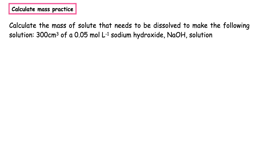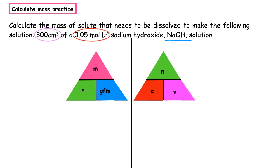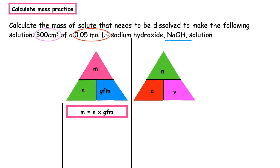The second worked example wants us to calculate the mass of solute that needs to be dissolved to make the following solution: 300 centimeters cubed of a 0.05 mole per liter sodium hydroxide solution, and the formula is given as NaOH. We have to write down both triangles. Remember: 'my nice granny never cuts violets'. The question wants us to calculate the mass, so underneath that triangle we write mass = number of moles × gram formula mass. We haven't been given a number of moles, but we have been given a formula to calculate the gram formula mass.